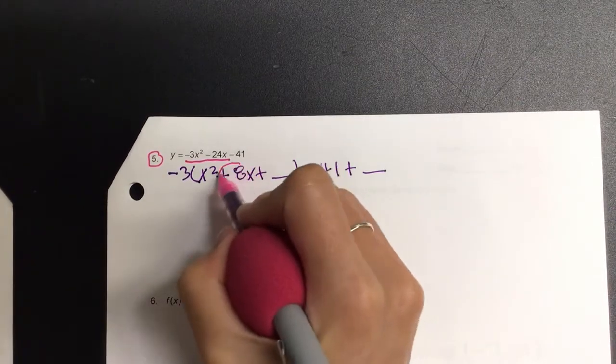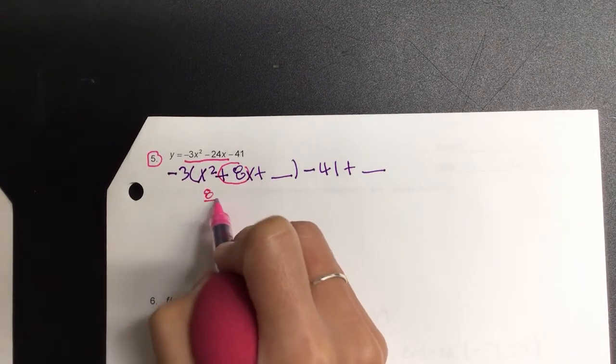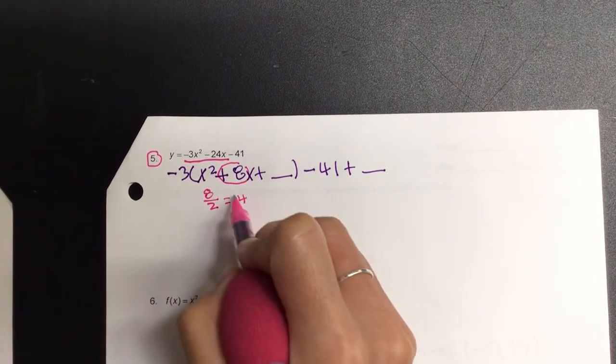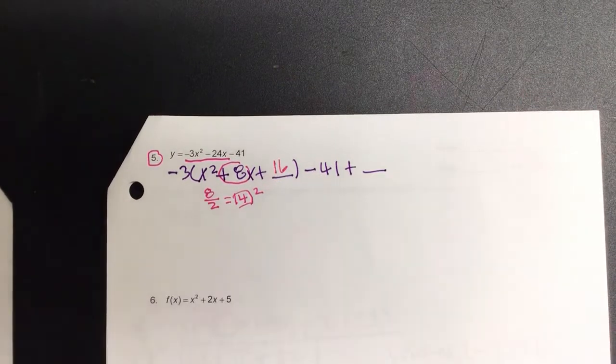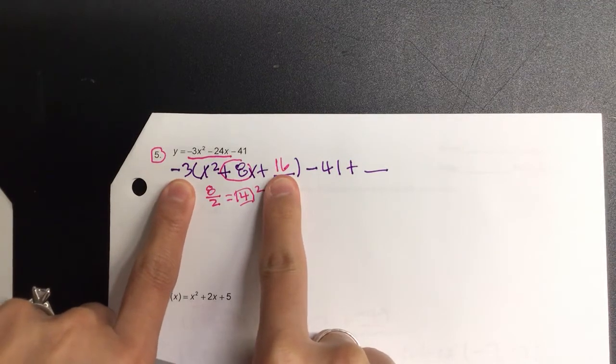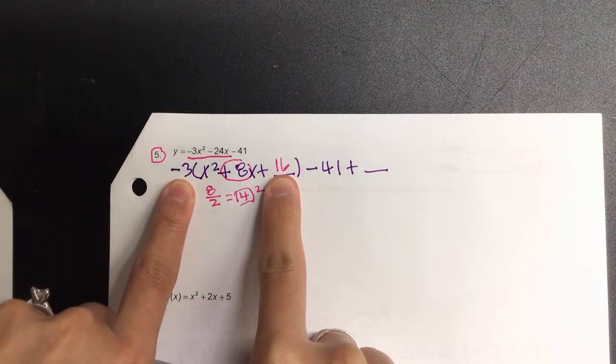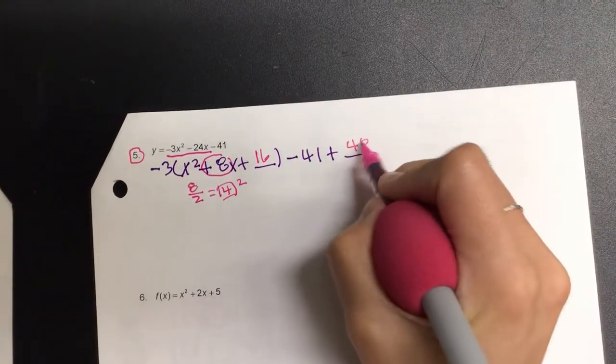And go ahead and circle your middle term. So our phrase is, we take this term and do what? Half it. Square it. Box it. Square it. Which gives me? 16. But then don't write minus 16 at the end. The actual number represented by negative 3 times 16 is negative? 48. So opposite of negative 48 is? Just 48.